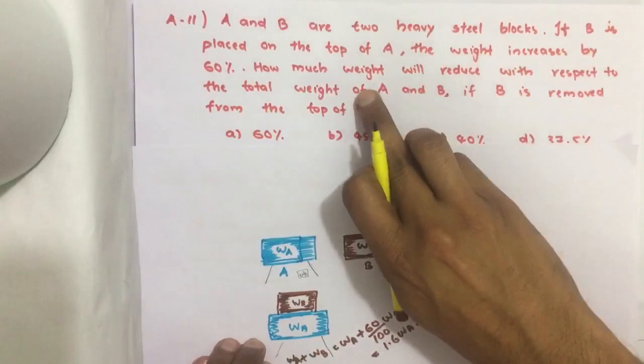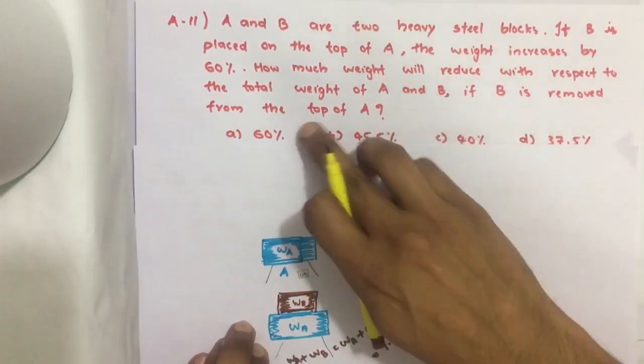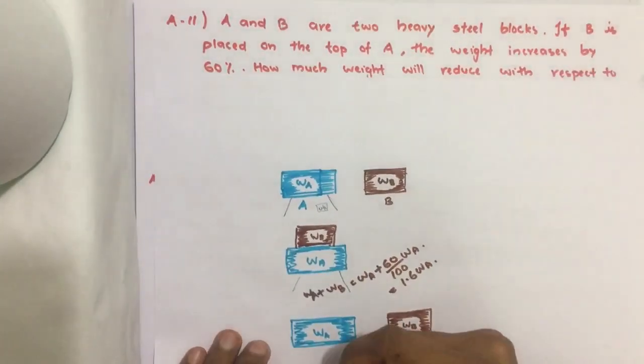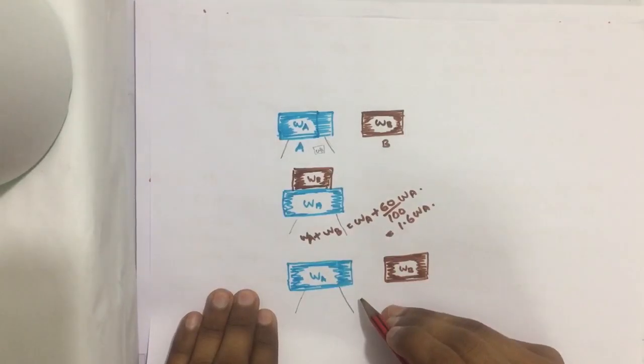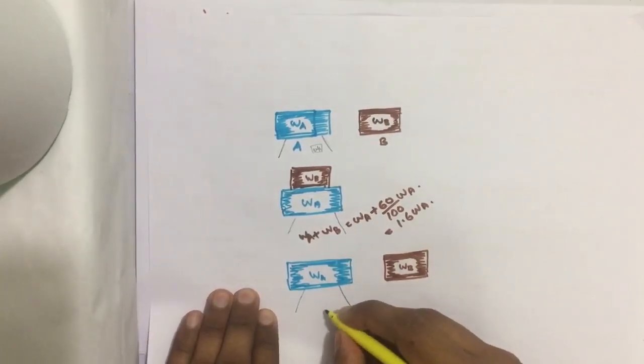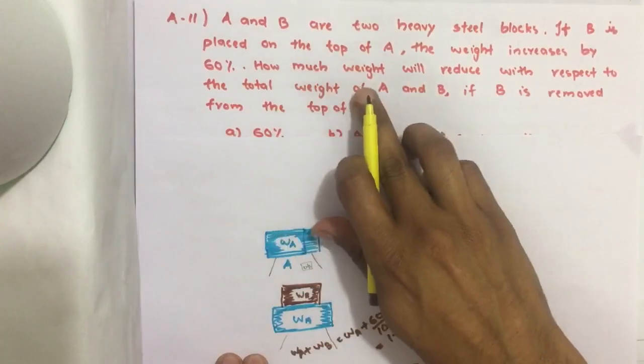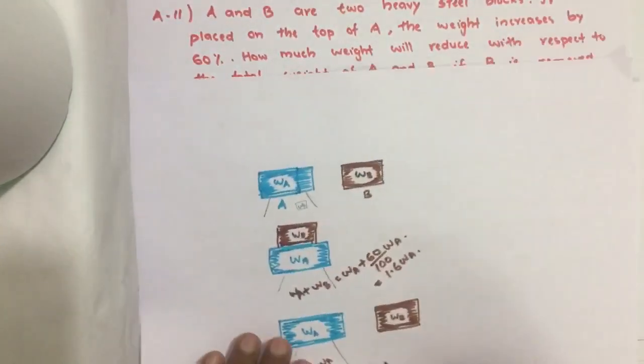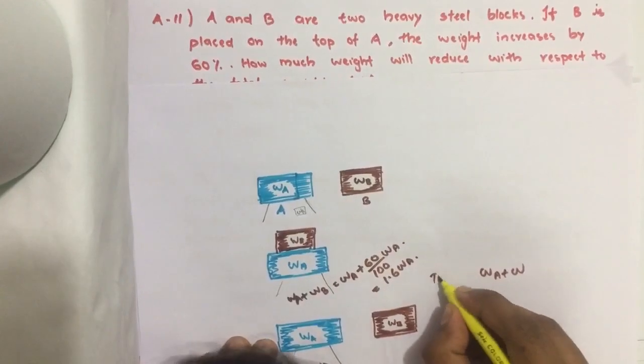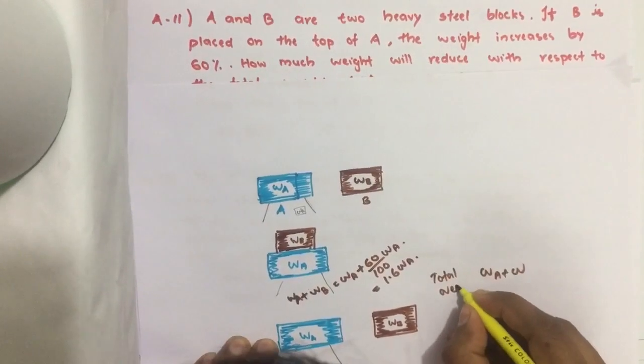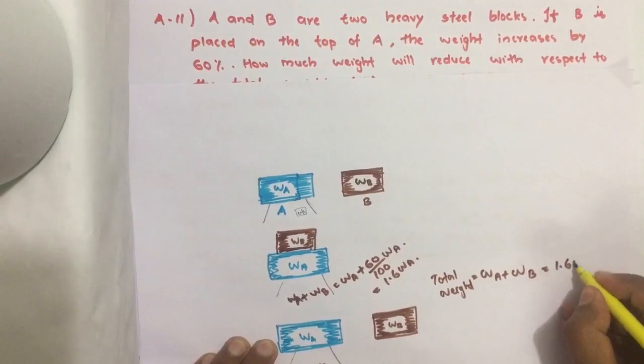Now, how much weight will reduce with respect to the total weight of A and B if B is removed from the top of A? Again, I removed this block B from the top of WA. Then the weighing machine will show WA. The question asks how much weight will reduce with respect to total weight. What is the total weight? Total weight equals WA plus WB, that's equal to 1.6 WA.